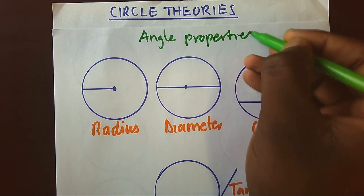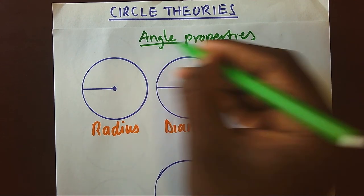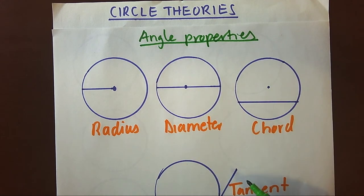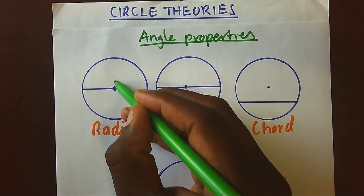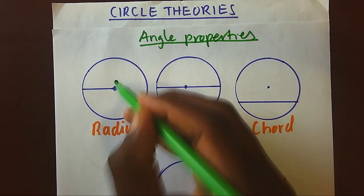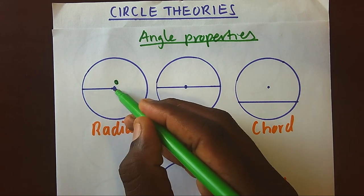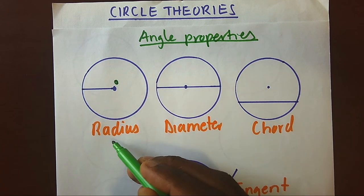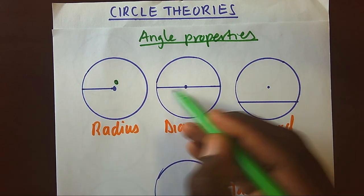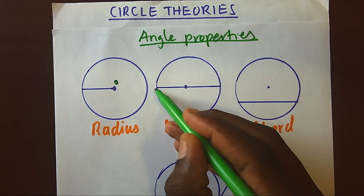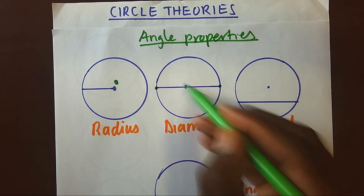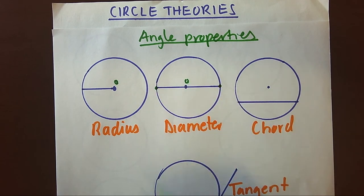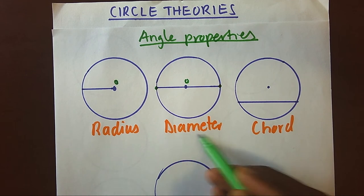Before we look at circle theories, let's remind ourselves of some definitions. When we have a straight line from one end of the circle to the center, we call it a radius. But when we have a straight line from one end of the circle to another end of the circle through the center, we call it a diameter.